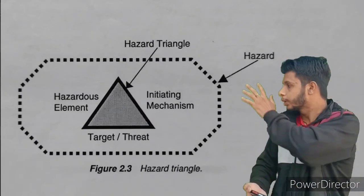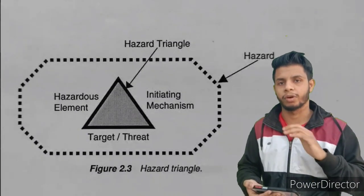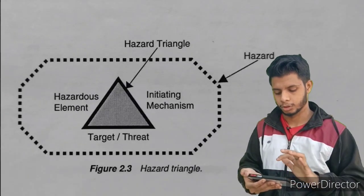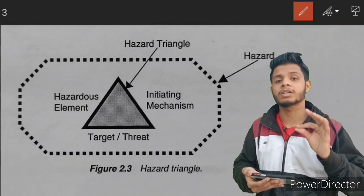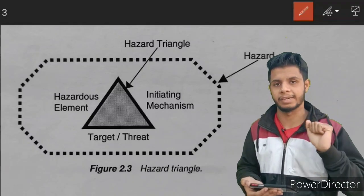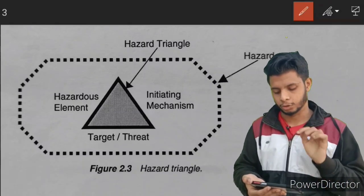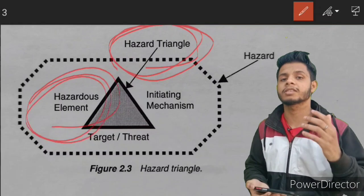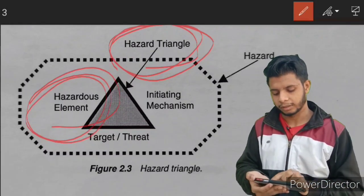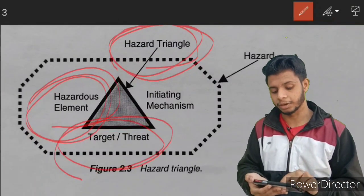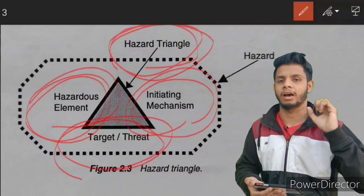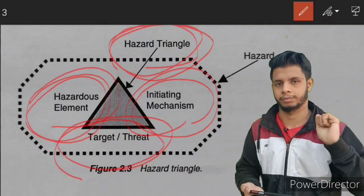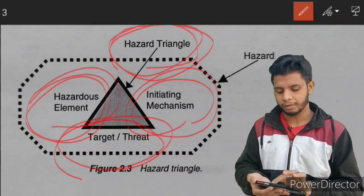Starting from the basics, you can see here one diagram called the hazard triangle. A hazard triangle is a diagram that represents the three major elements required for a hazard to exist. These three elements are: first, the hazardous element (HE); second, target and threat (TT); and third, initiating mechanism (IM). When these three elements are present in a particular configuration, only then will a hazard occur. If you remove one element from the triangle, a hazard will never occur. It is pretty much similar to the fire triangle.